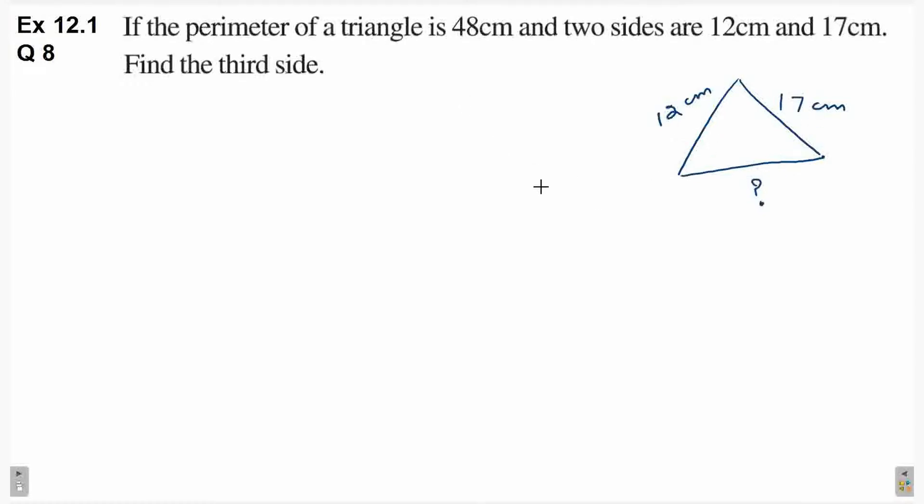So, here we can easily find the third side length. So perimeter of triangle is the sum of all three sides' length. So I'll write this here: side 1 plus side 2 plus side 3.